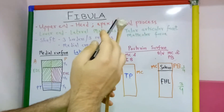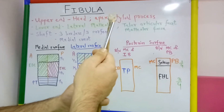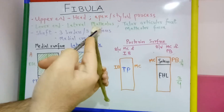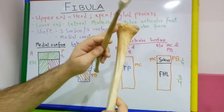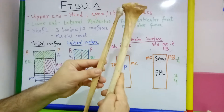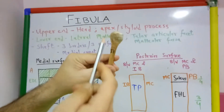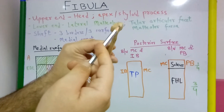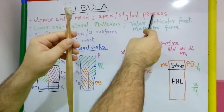The upper end is also known as the head. It is slightly expanded in all directions. The superior surface of the head has a circular articular facet, which will articulate with the lateral condyle of tibia, forming the superior tibiofibular joint. From the posterolateral aspect of the head, there is a projection known as the apex or styloid process.